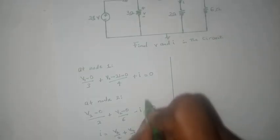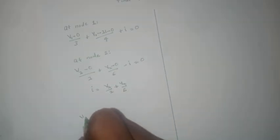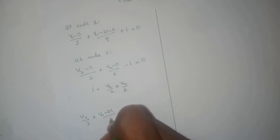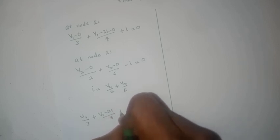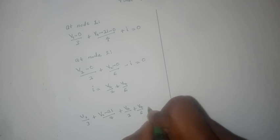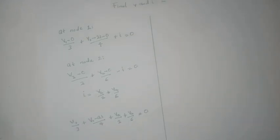So we would have an equation that looks like this: v1 divided by 3 plus v1 minus 21 over 4 plus v2 divided by 2 plus v2 divided by 6, all equals to zero.